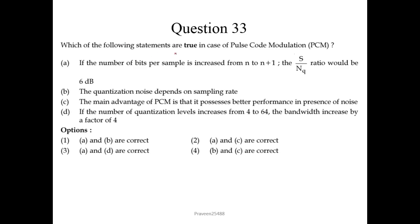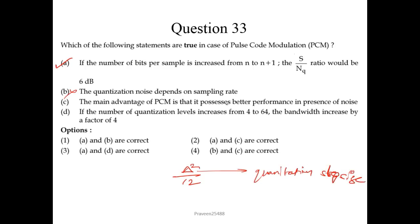Question number 33: which of the following statements are true for pulse code modulation (PCM)? If the number of bits per sample is increased from n to n+1, the SNR (signal-to-noise ratio) increases by 6 dB — correct. The quantization noise depends on sampling rate — not correct; quantization noise is given as Δ²/12, where Δ is the quantization step size, which does not depend on sampling rate. The main advantage of PCM is better performance in the presence of noise — correct. If quantization levels increase from 4 to 64, bandwidth increases by a factor of 4 — not correct. So A and C are correct; second option is correct.